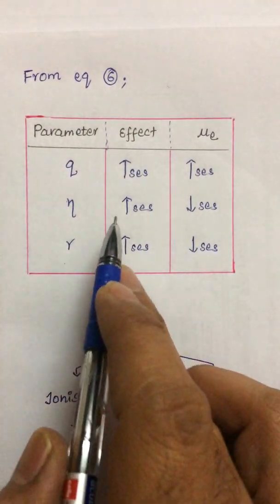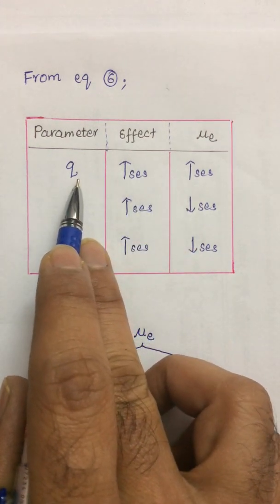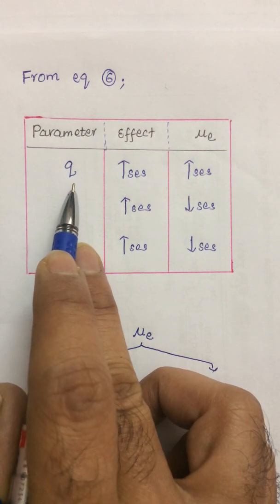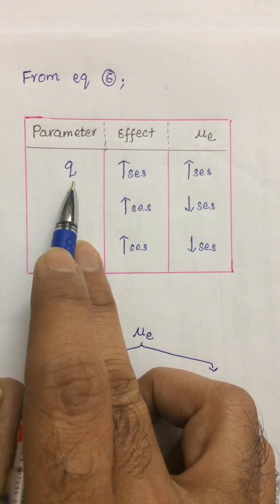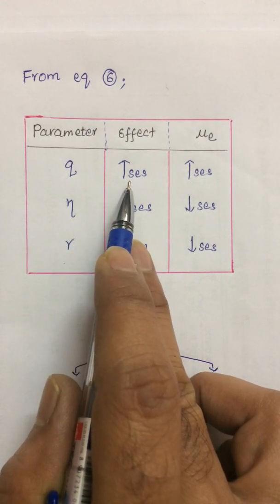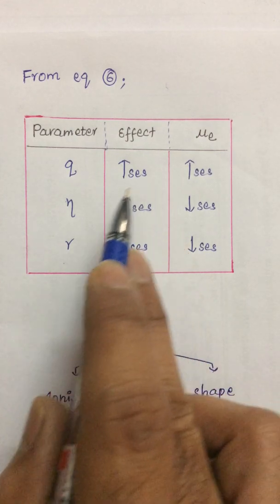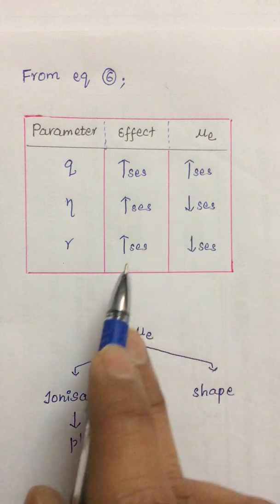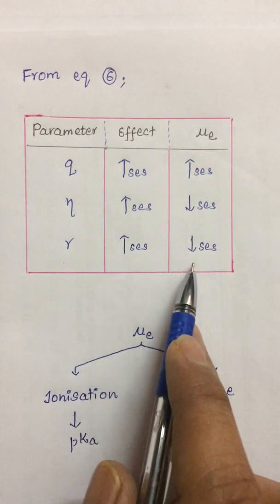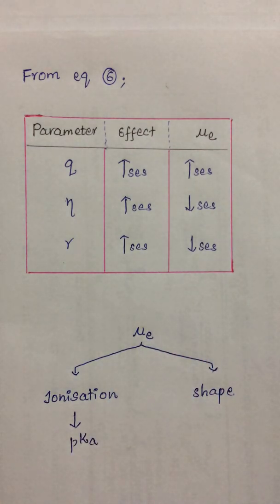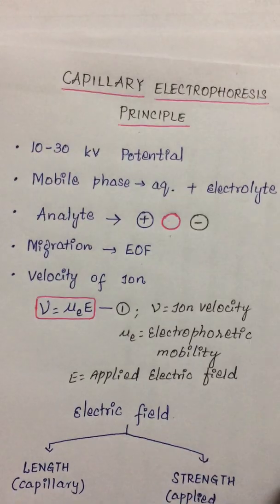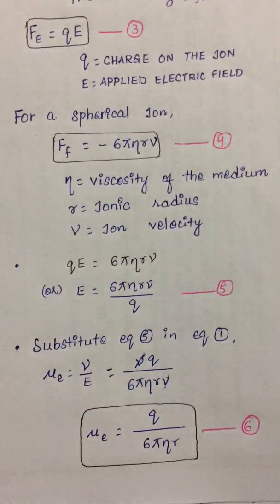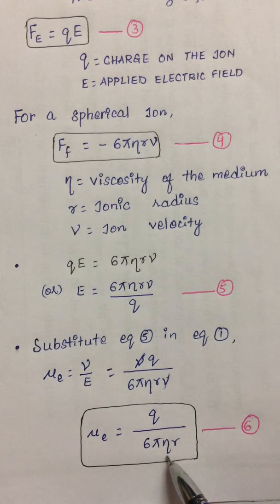From this derived equation, we can conclude three important things. First, as the charge on the ion increases, higher will be its ionic mobility. Second, as the viscosity increases, the ionic mobility decreases — they are inversely related. Third, larger the ionic radius, smaller will be its mobility. From the first equation, we have derived the relationship between ionic mobility, charge, viscosity, and radius.